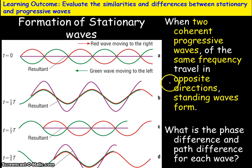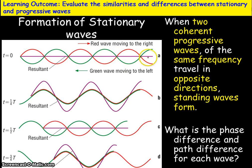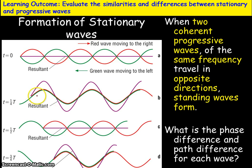Stationary waves are formed when two coherent progressive waves of the same frequency travel in opposite directions. In this diagram, the red and green waves move in opposite directions and the resultant is shown in purple. At a particular point, every point on the resultant wave has a displacement of zero. As time goes on, the phase difference between the waves changes, so where we had destructive interference we will now get constructive interference.